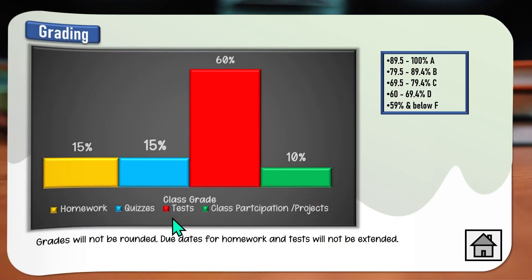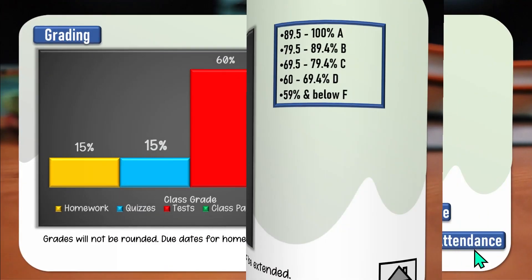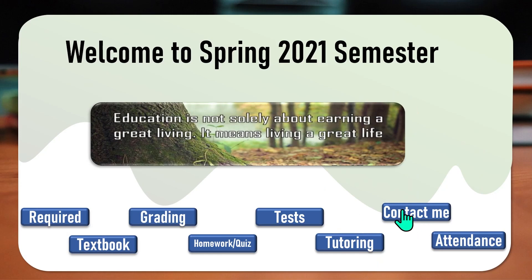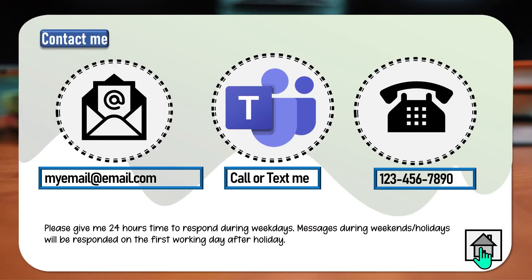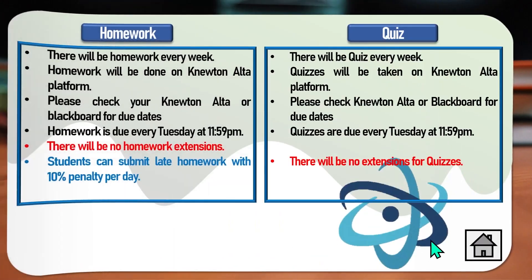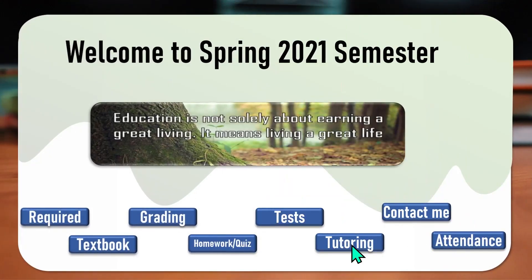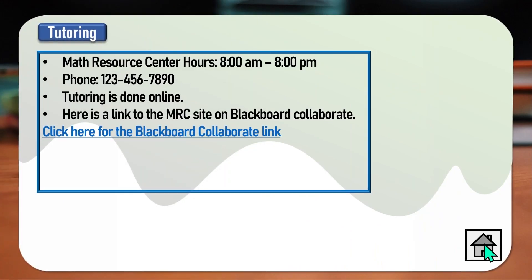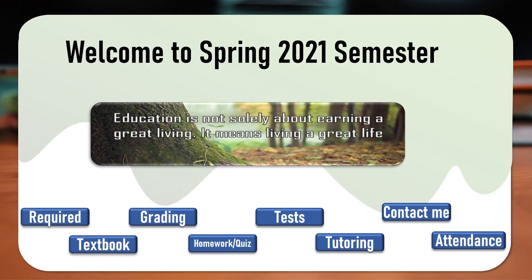Something like this — click on the grading scale, click on the attendance, click on your contact information, and they have everything in one place. So without further ado, let's go ahead and jump right into it.